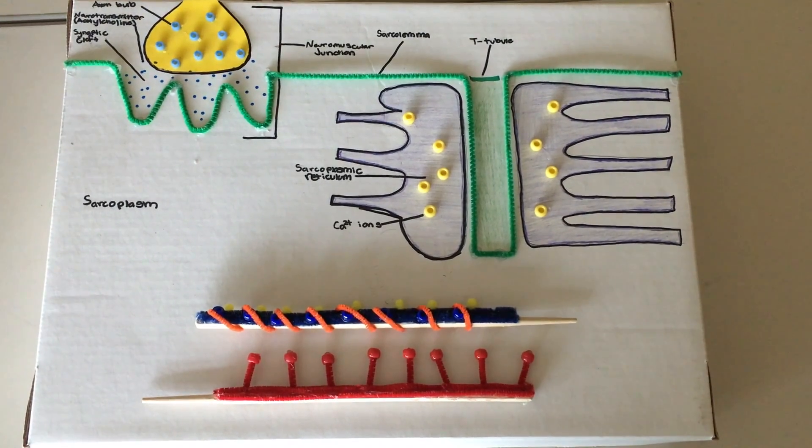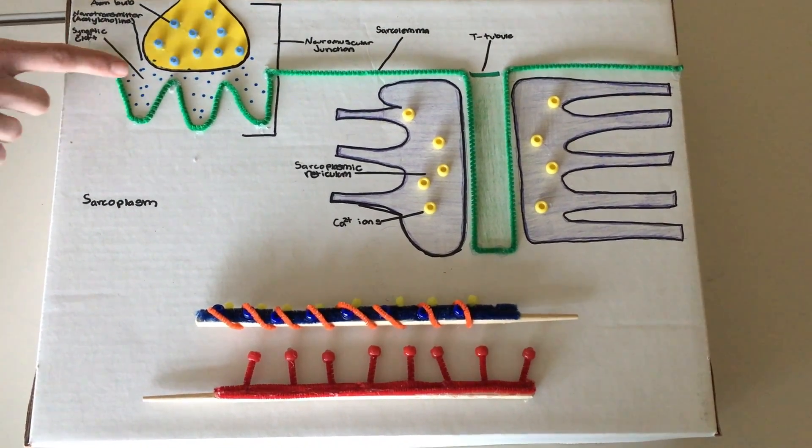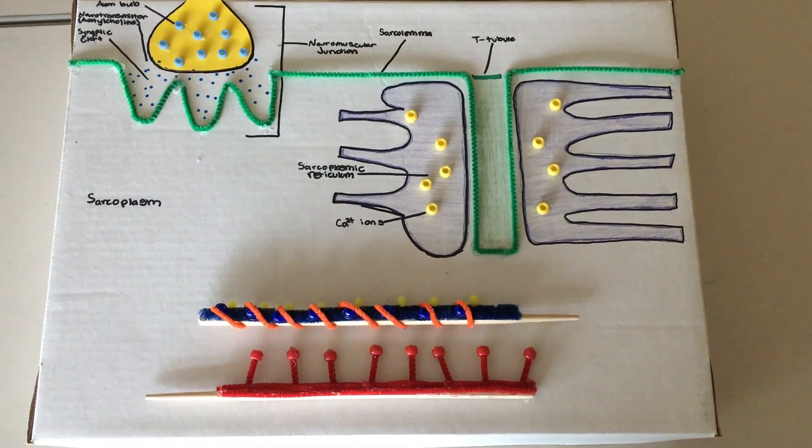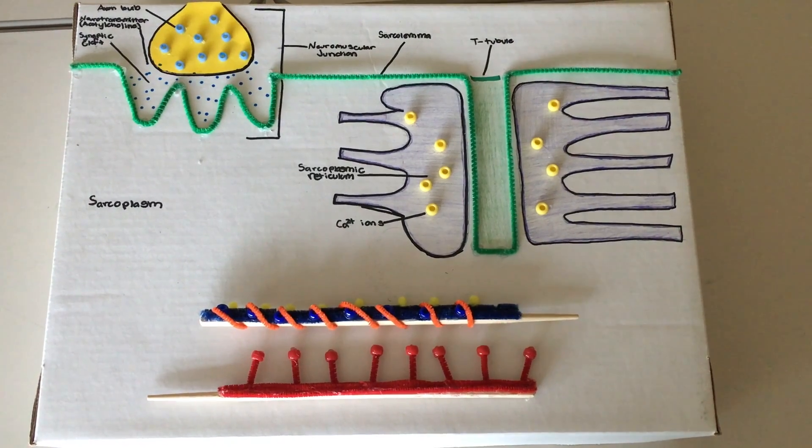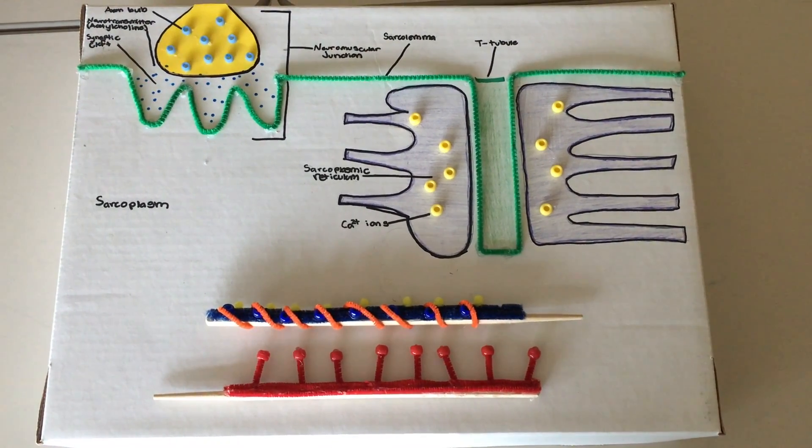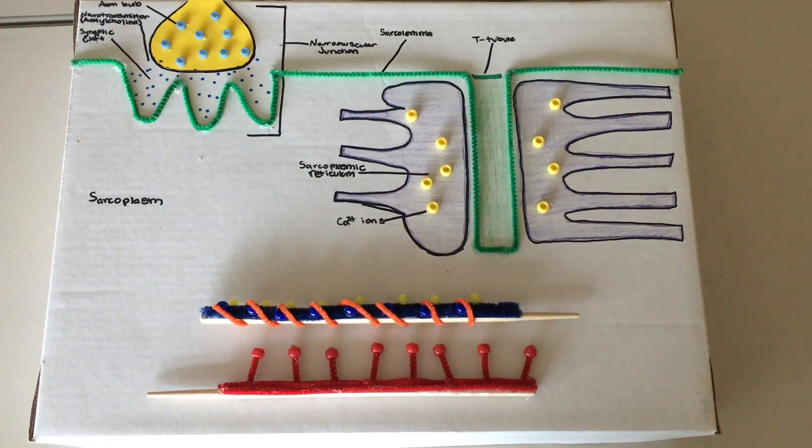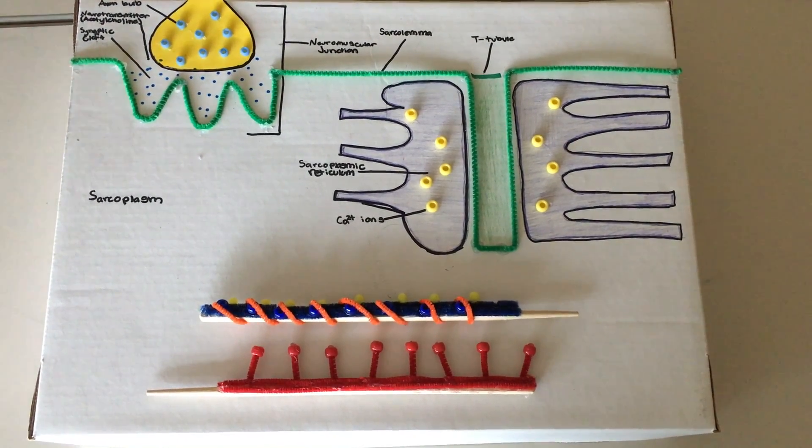Chemical signaling occurs when the neurotransmitter molecule release is stimulated by the action potential transmission, causing the vesicles within the axon bulb to expel neurotransmitters. In this case, we have acetylcholine into the synapse or synaptic cleft where it will then bind with the ion channel receptors on the sarcolemma or the membrane of the myofiber.